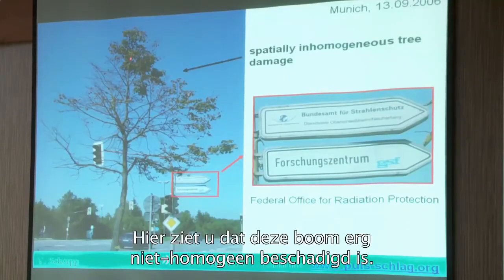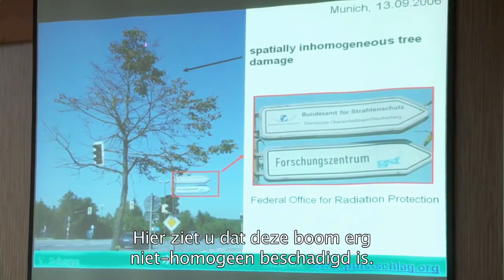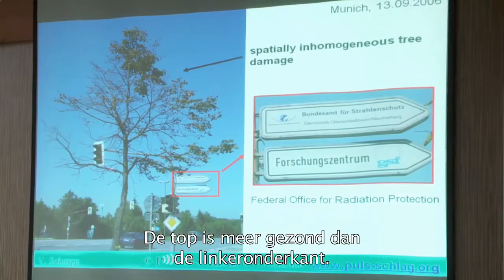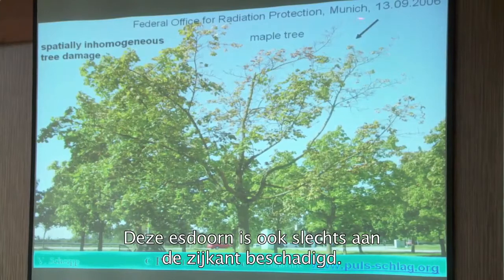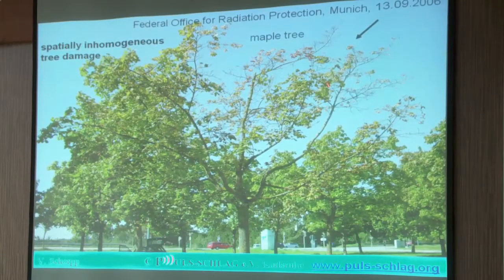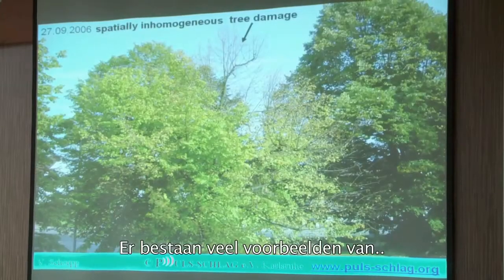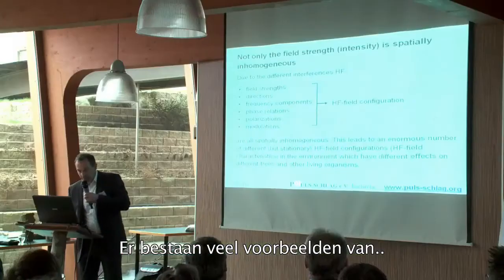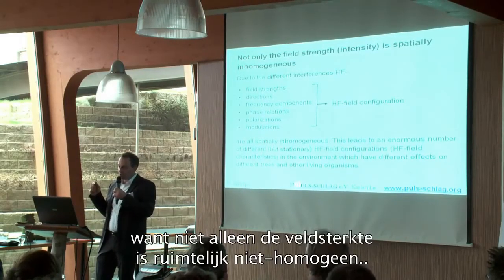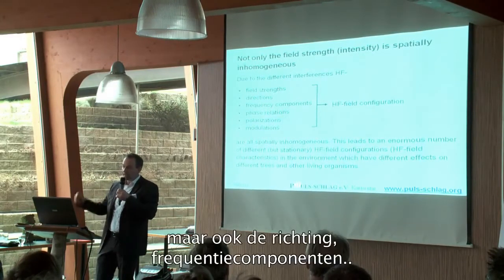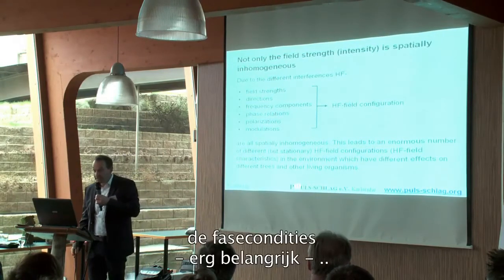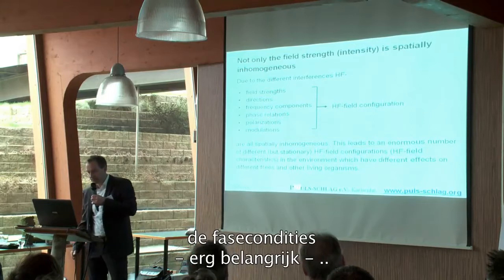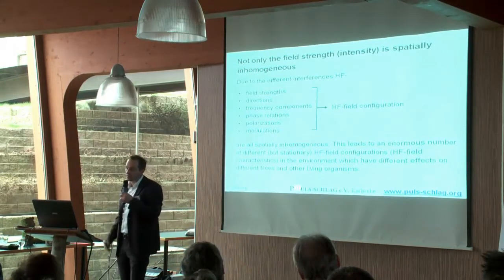This tree is very inhomogeneously damaged — the top is more healthy than the left downside. This maple tree, located directly at the Federal Office of Radiation Protection, is also slightly damaged. I have many inhomogeneously damaged trees because not only the field strength is spatially inhomogeneous, but also the direction of the field, the frequency components, the phase relation — a very important biological effect — the phase relation of different waves.